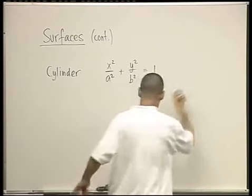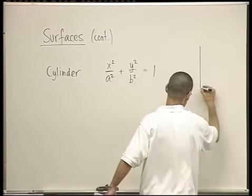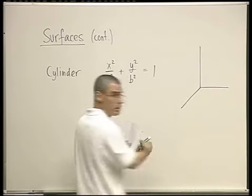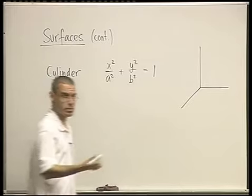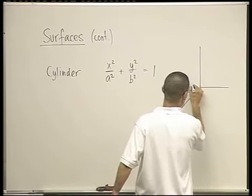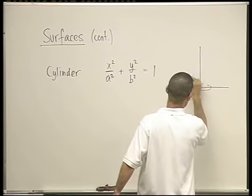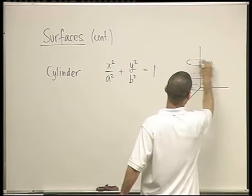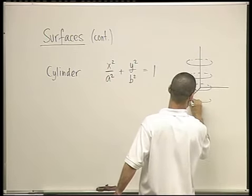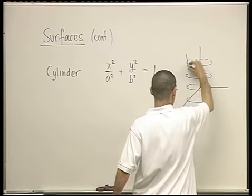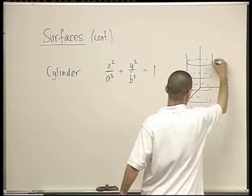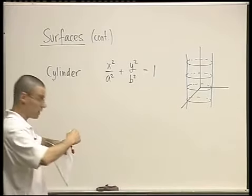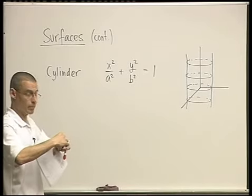So for all z's, we're going to just get this, just a big pile of ellipses, right? So there's an ellipse here, and it's exactly the same ellipse at any z. So the shape is just what you would call a cylinder. Does everybody agree that this is what we get?